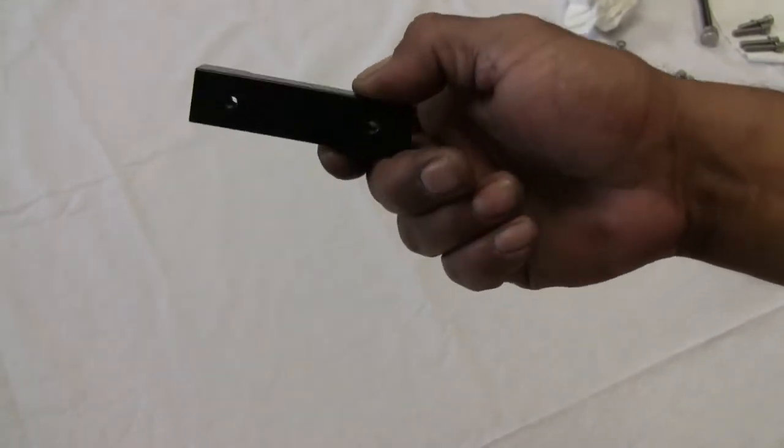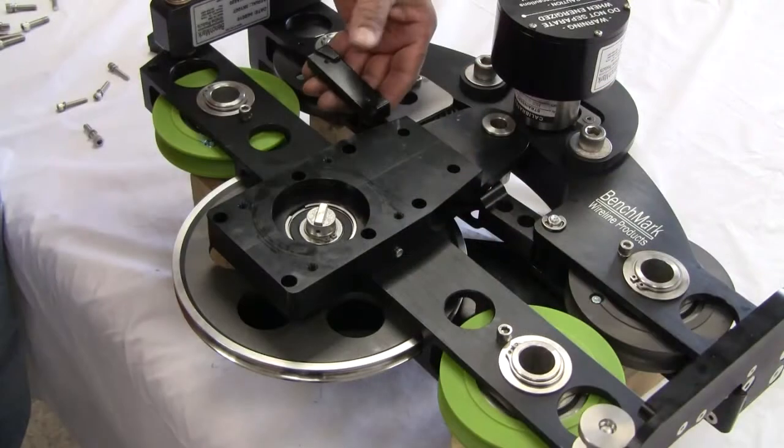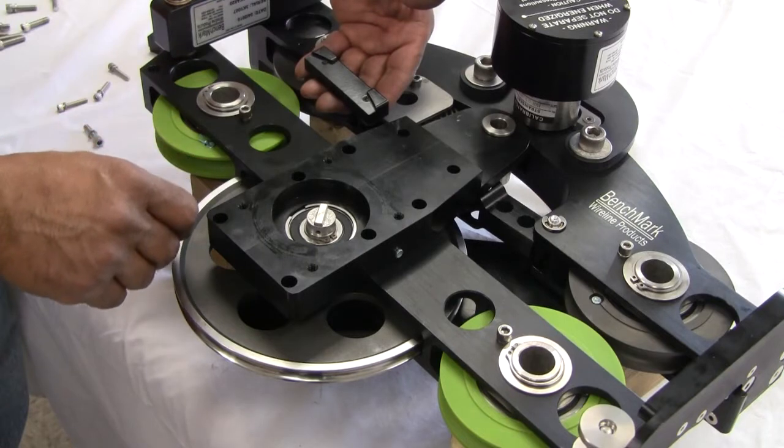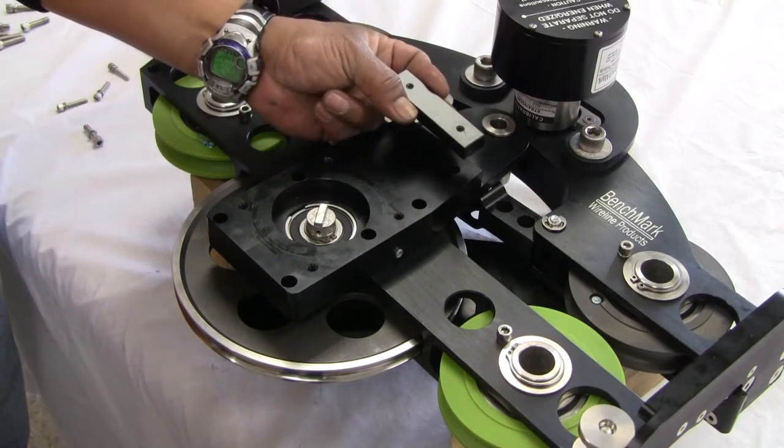Note that the wear bar has a flat side and a side with an arc cut out allowing room for the measuring wheel to spin. Replace the flat side of the wear bar against the underside of the side bar and bolt it in place.